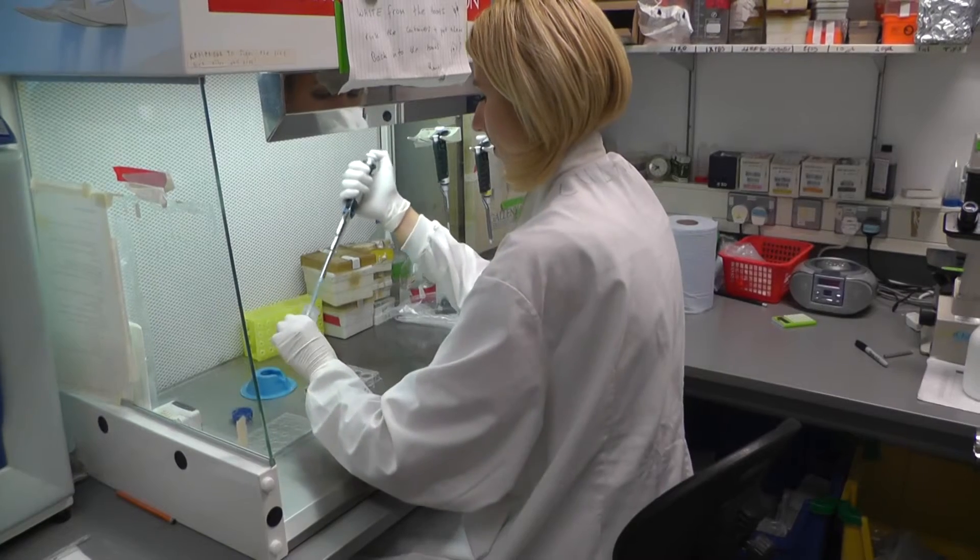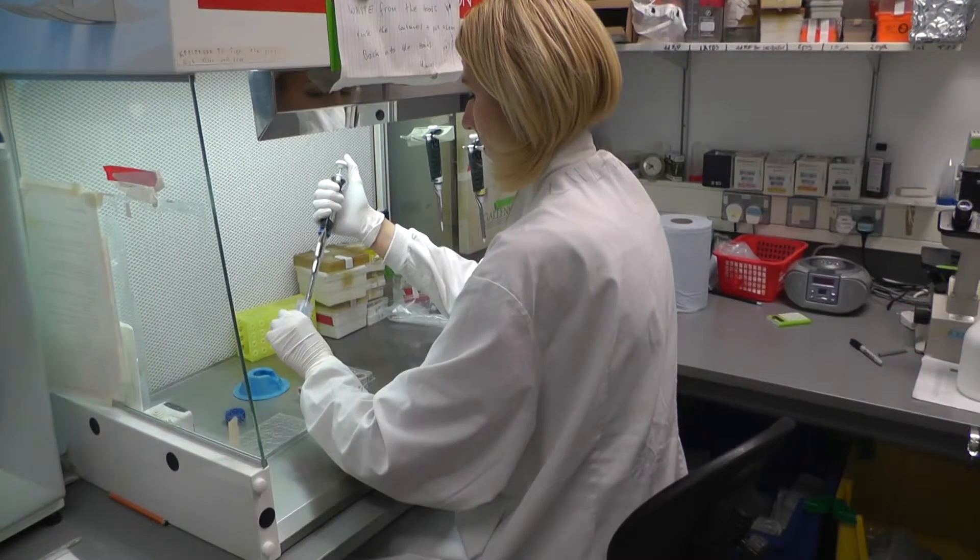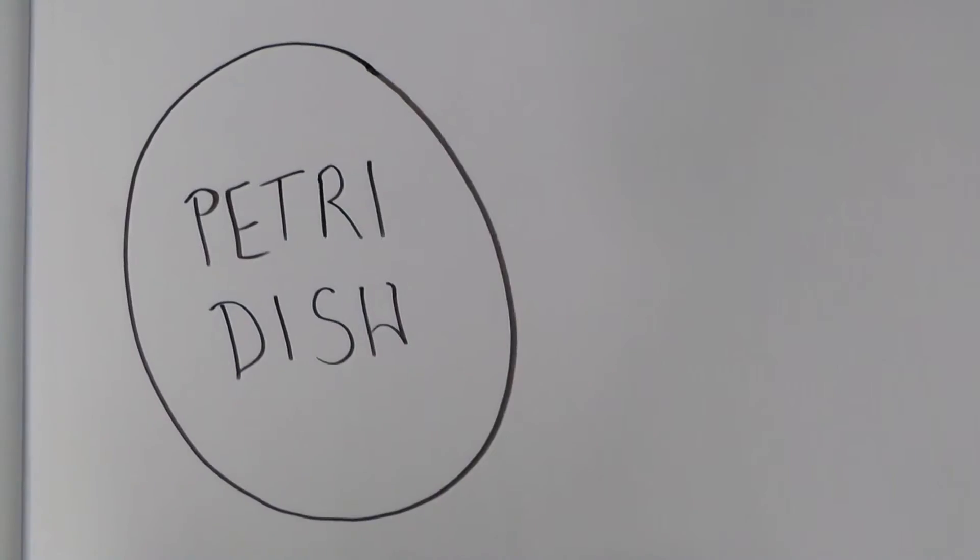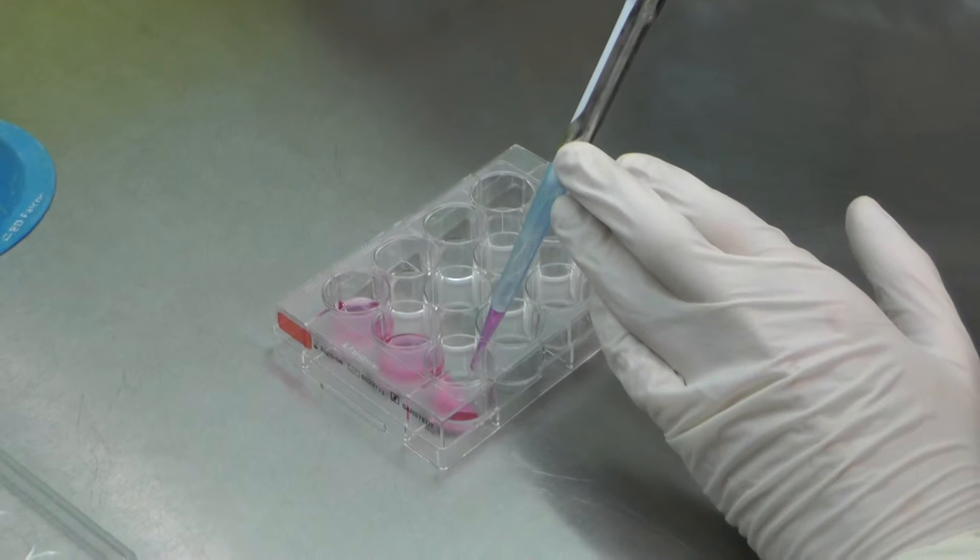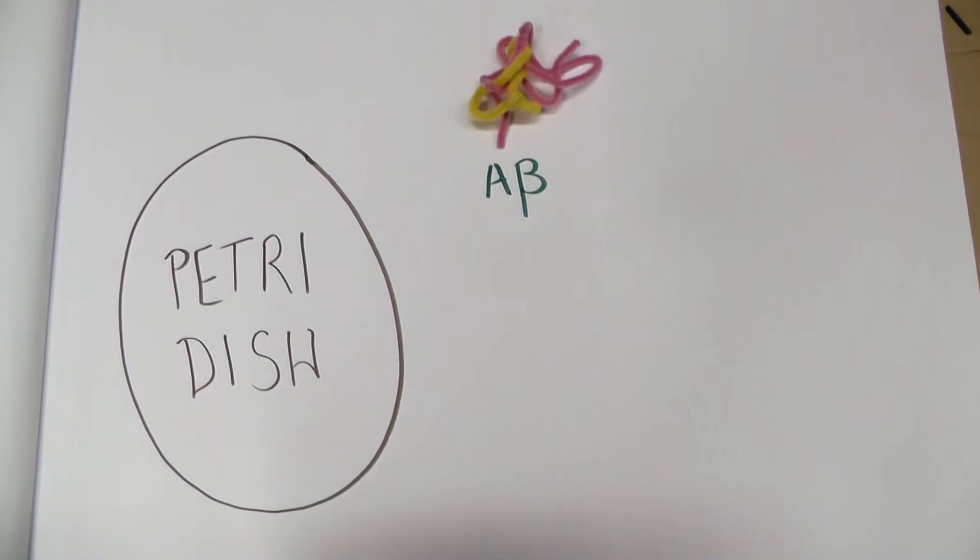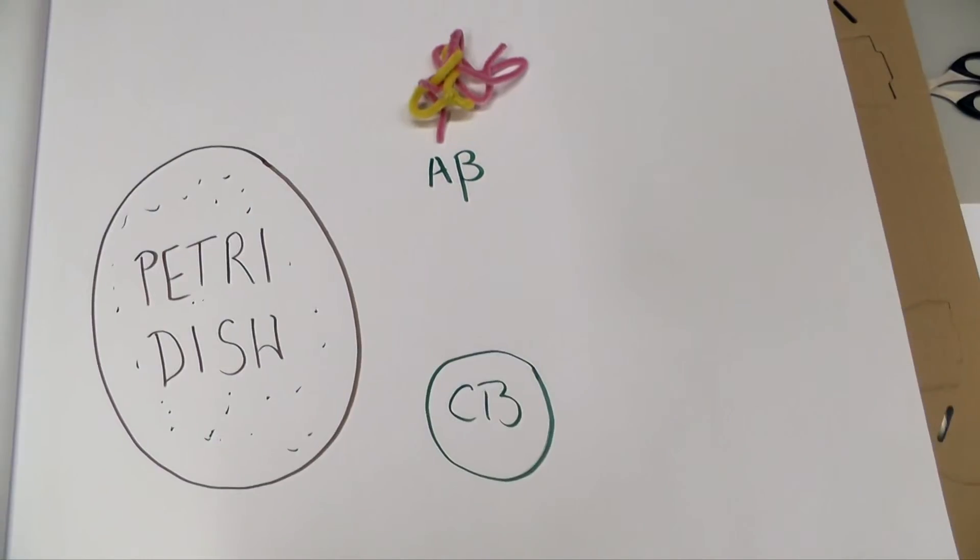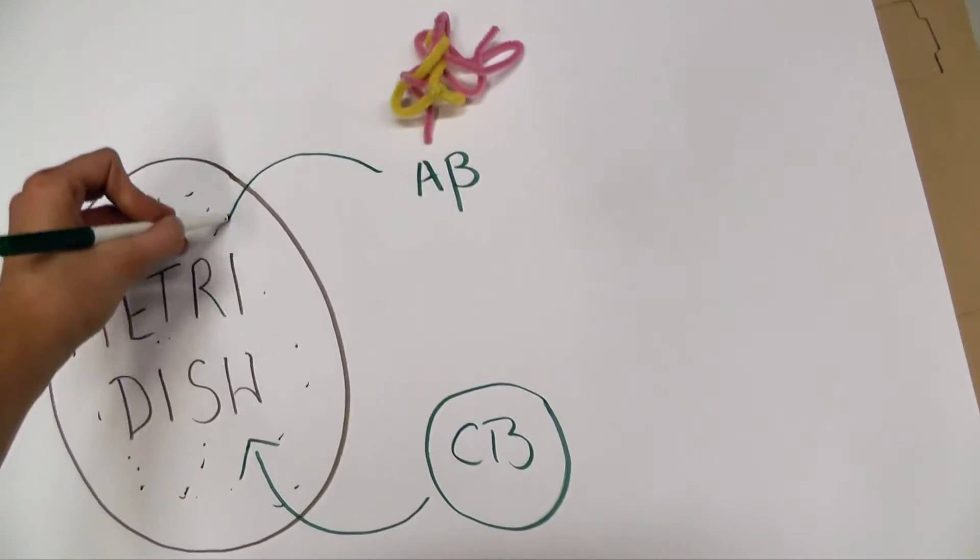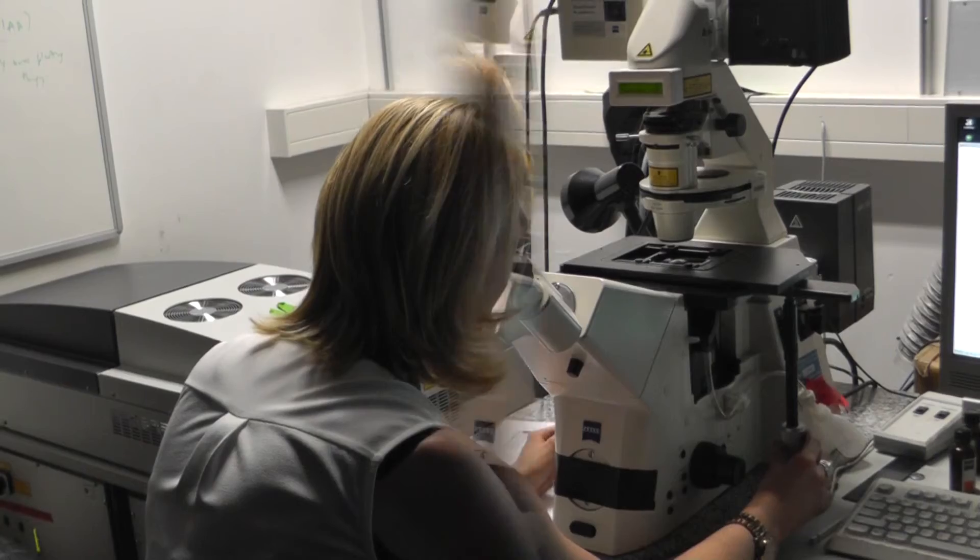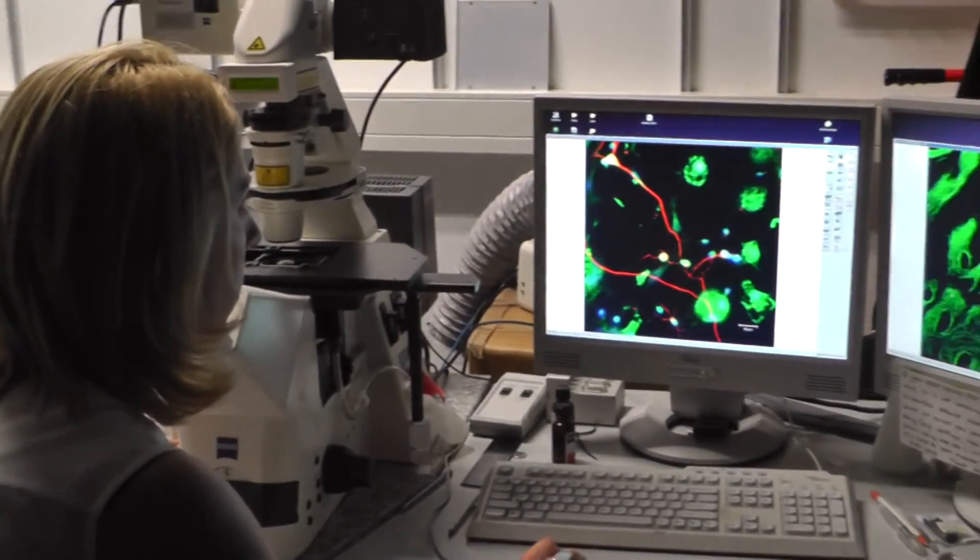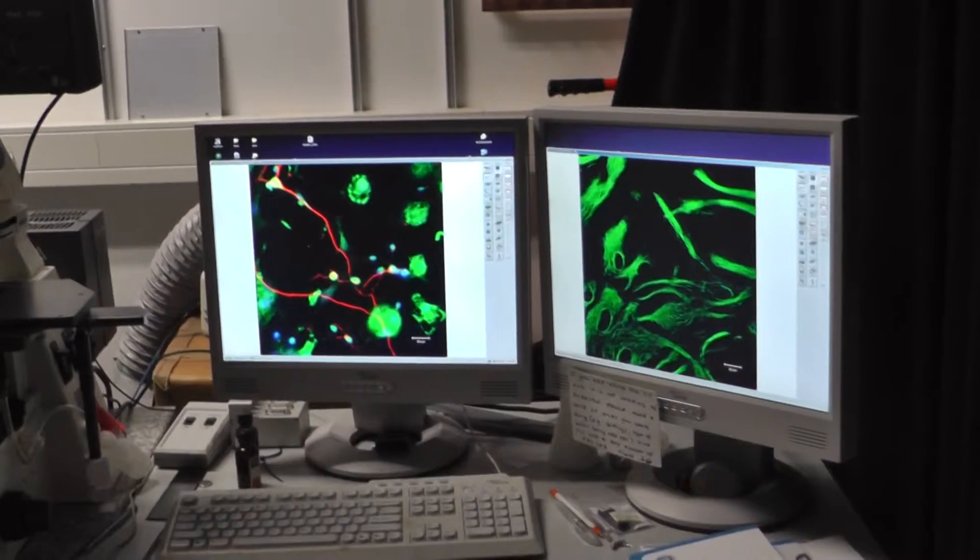I conduct my experiments by obtaining neurons from rat brains. I then grow these cells in a sterile container such as a petri dish. After leaving them to grow I add aggregated amyloid beta and my cannabinoid compounds. Later I use a variety of experiments to test if the cannabinoid compounds have improved or worsened levels of neurodegeneration.